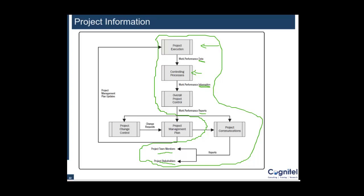When you are in the controlling process, you try to analyze this data and understand: how much are we ahead of or behind schedule? Are we running on schedule? What is the utilization of resources? What is the remaining availability of resources? How much resource consumption have we already done? When you use that input from execution to make sense out of the data, it becomes information.